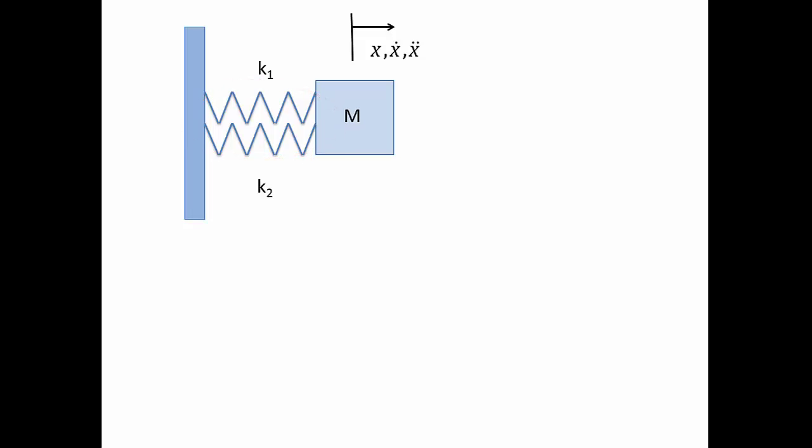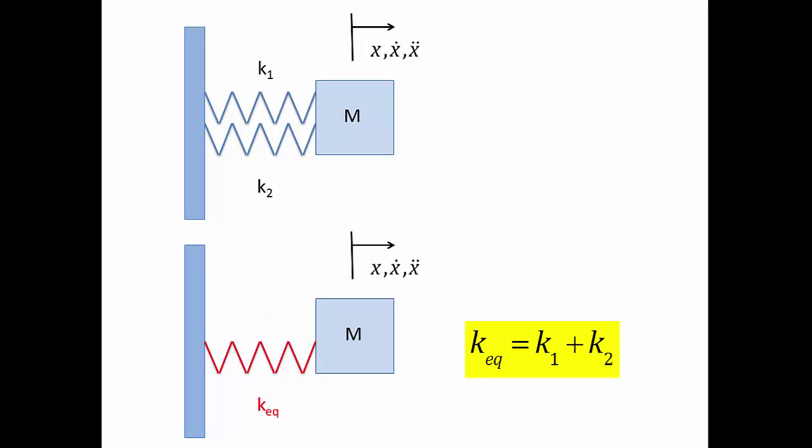The mass is allowed to move only in x direction and we define going to the right as positive. From class, we have learned that when springs are connected like this, we can find an equivalent system with only one spring that has the same performance. And we have learned that this equivalent spring constant k equals k1 plus k2.